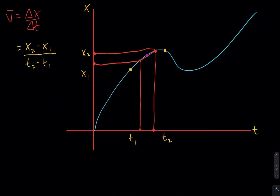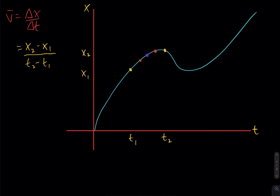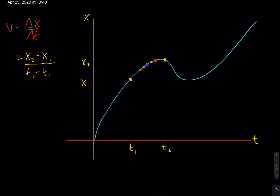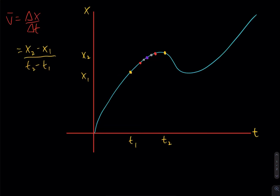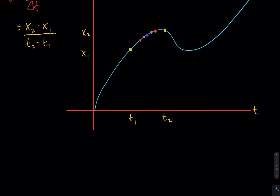If that estimate doesn't work, we can just make another estimate and shrink our interval even smaller. We can evaluate the average velocity over smaller and smaller intervals. We found our average velocity was delta x over delta t over that little interval. But we want the instantaneous velocity, so what if there was a way to shrink that interval all the way to zero?